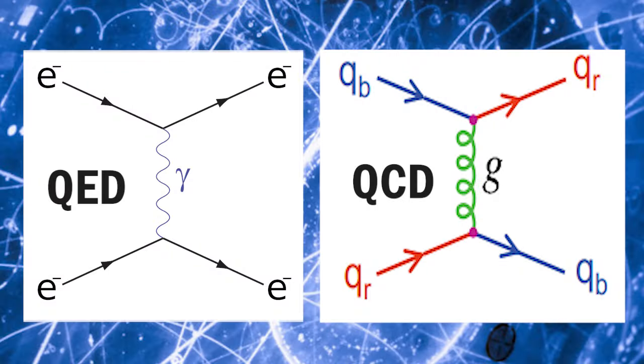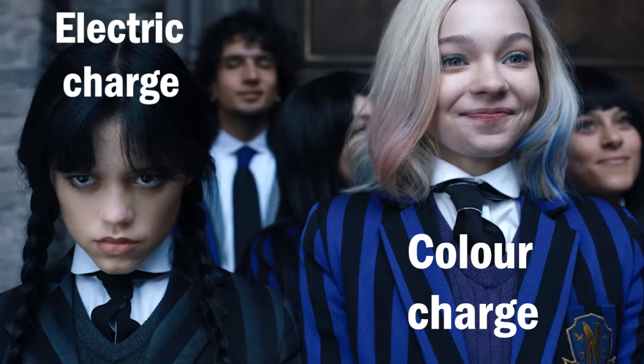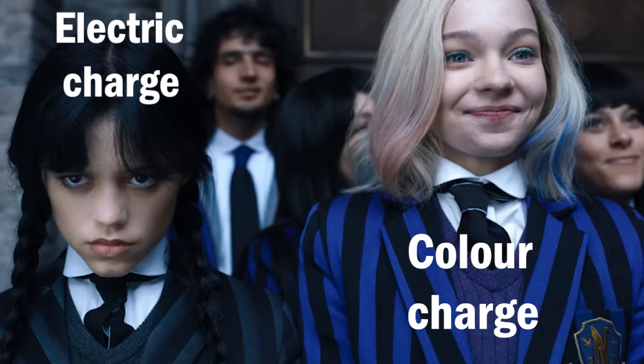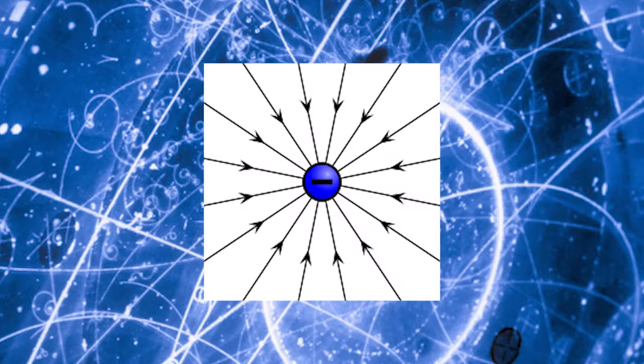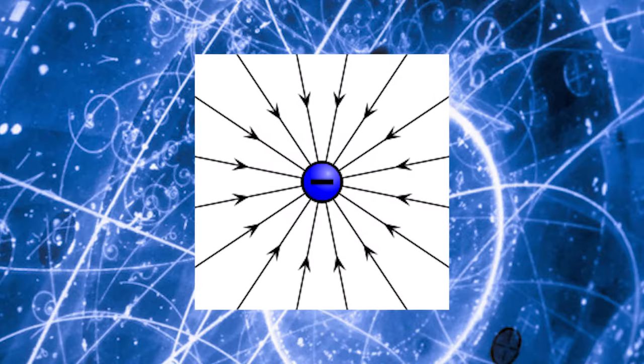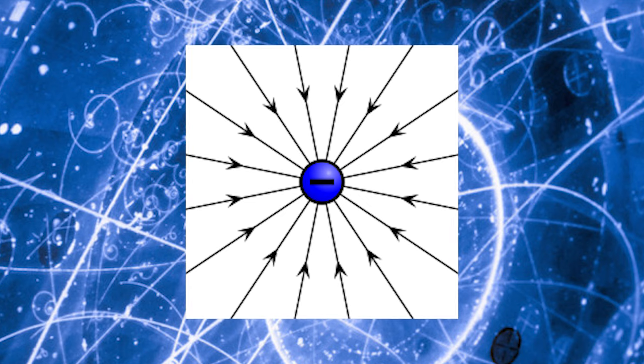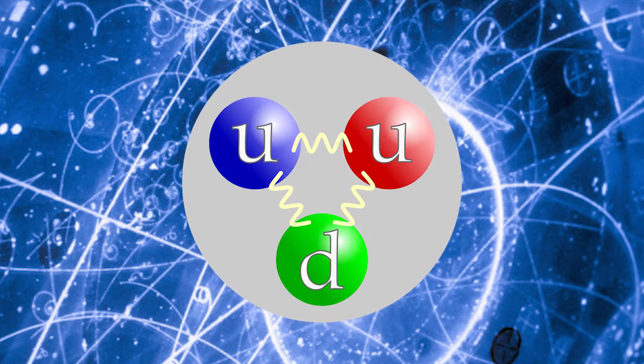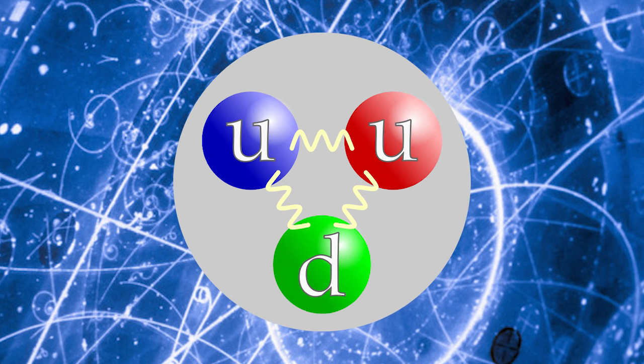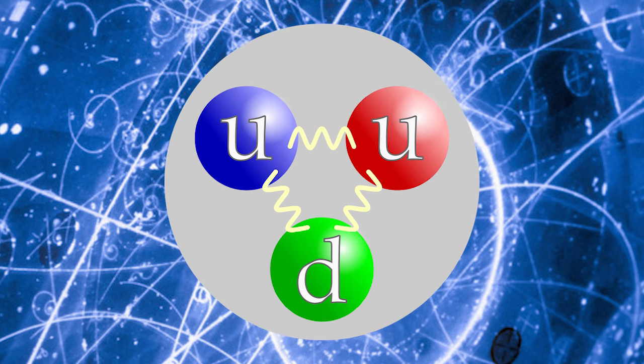So at first glance, quantum electrodynamics and quantum chromodynamics look very similar. However, there is a hugely impactful difference between electrostatic charge and color charge. Charged particles like electrons carry only one type of charge, negative. Quarks, on the other hand, can carry three different types: red, green, and blue.